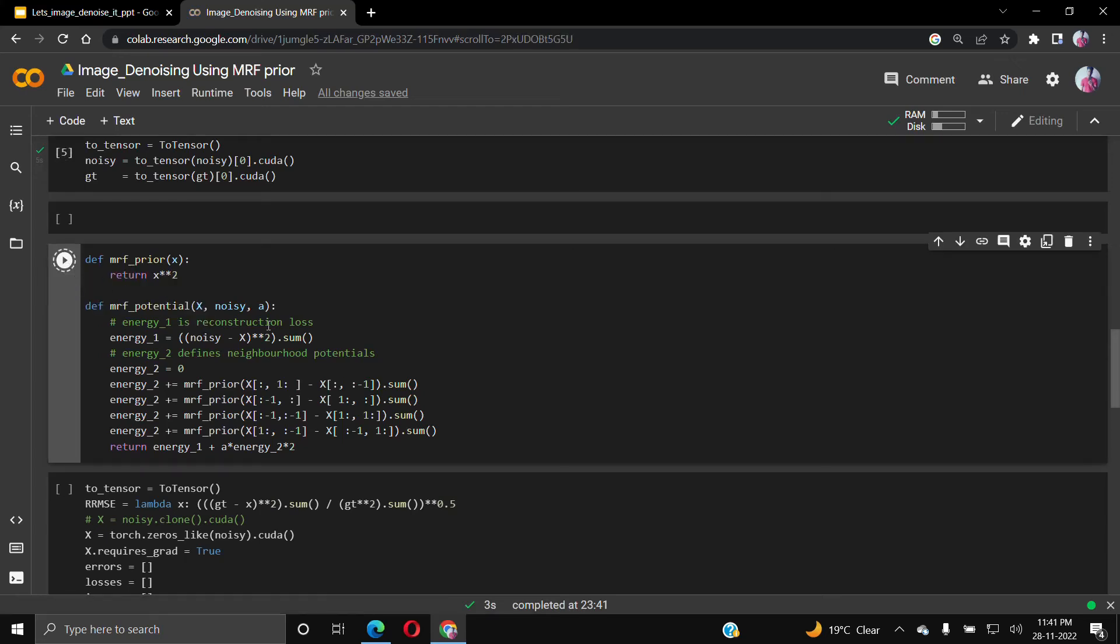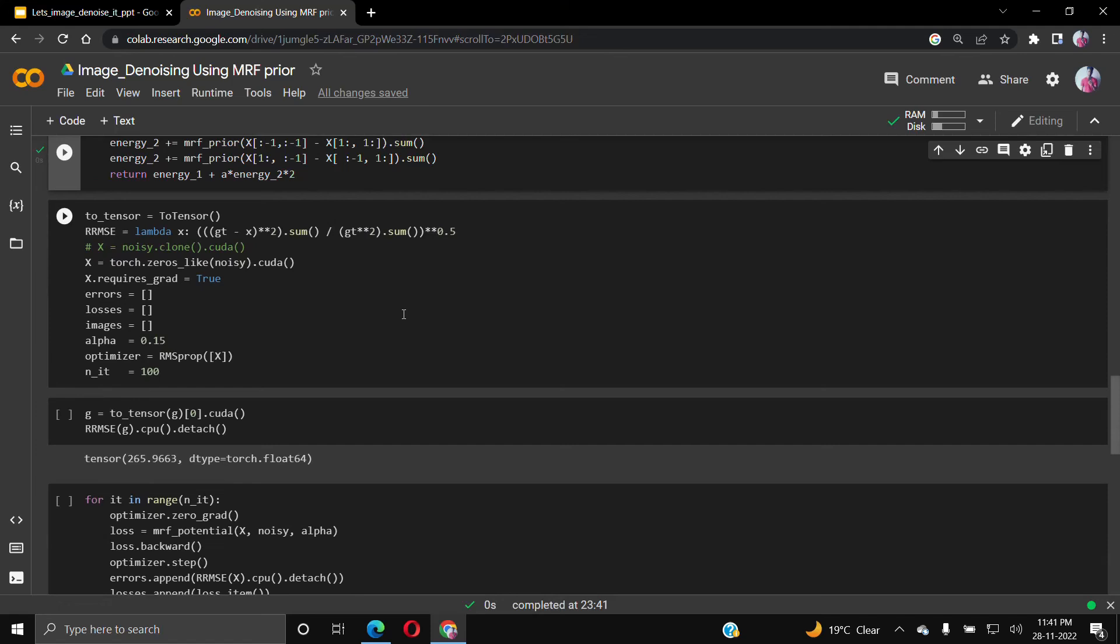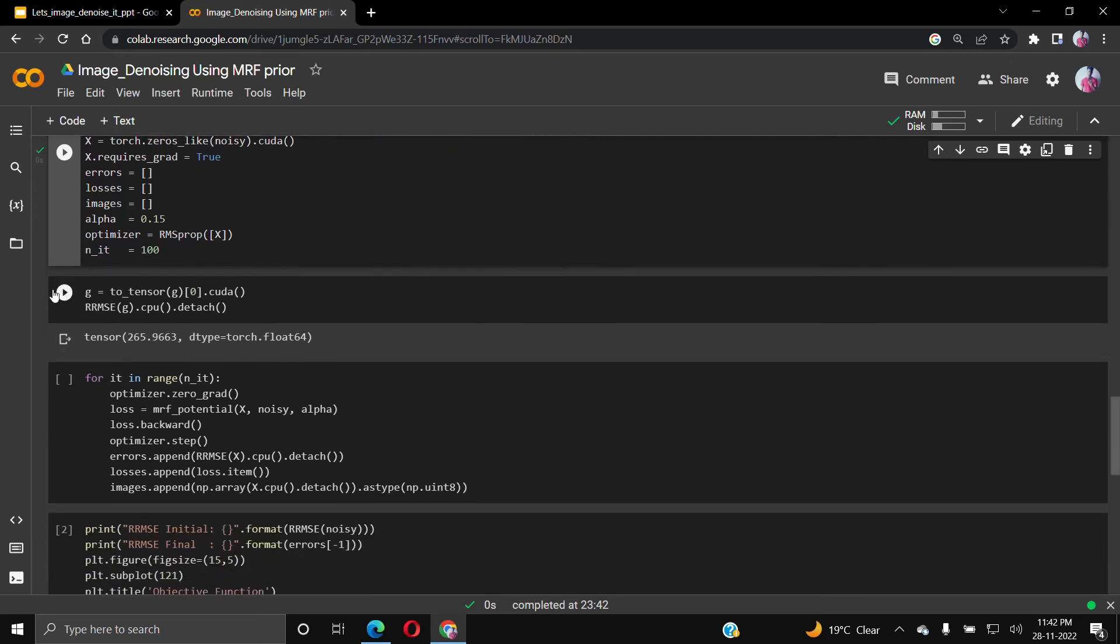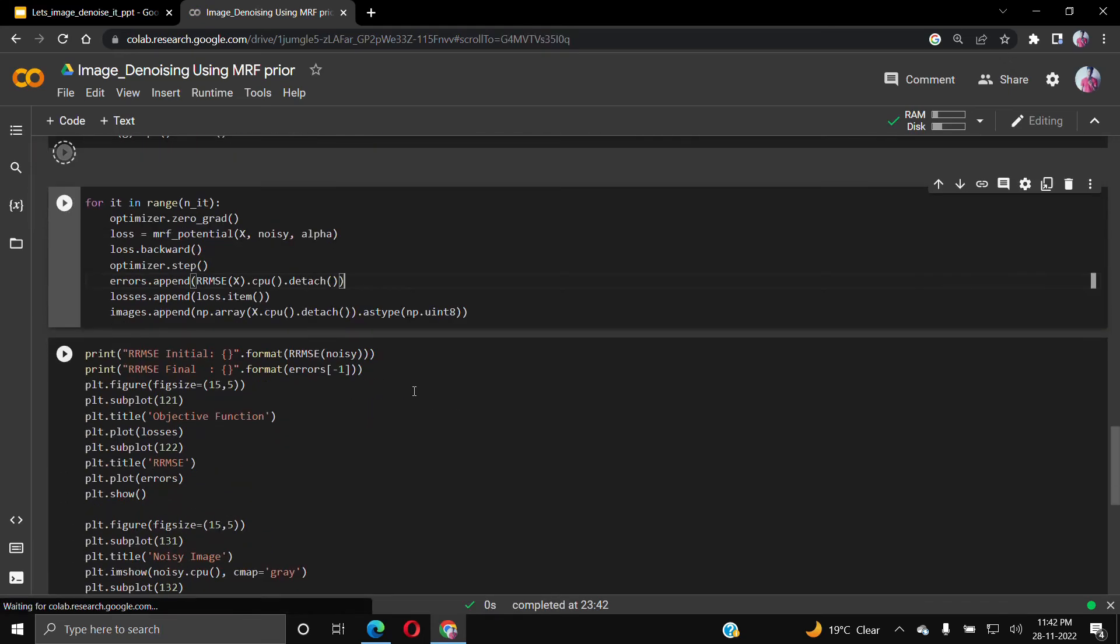We take an evaluation matrix as relative root mean square error. After every epoch we get some denoised image and we compare with the ground truth image.